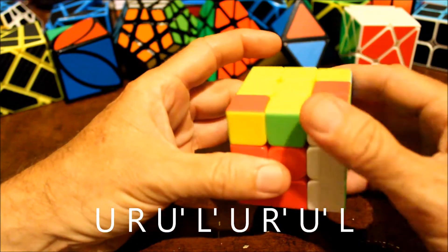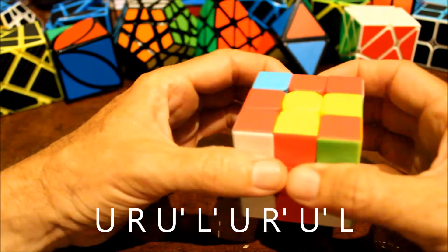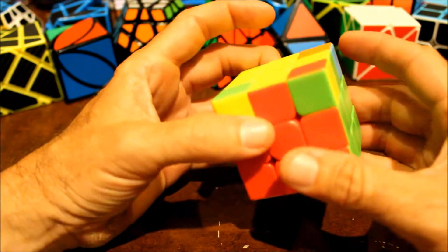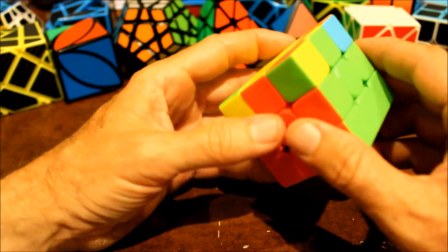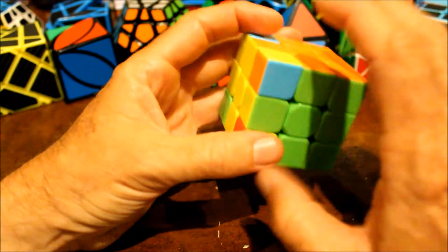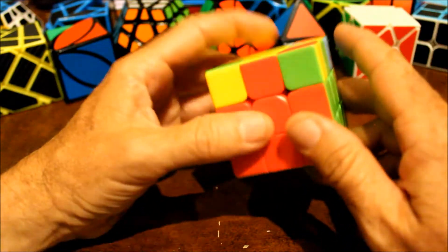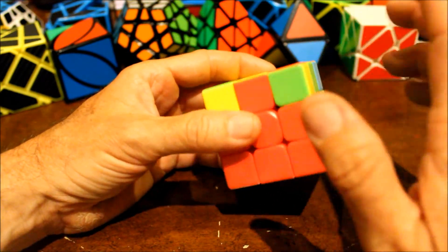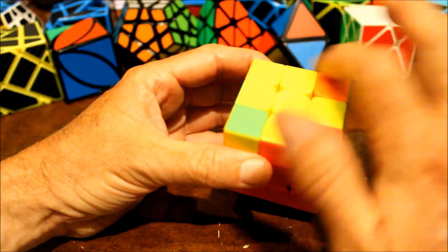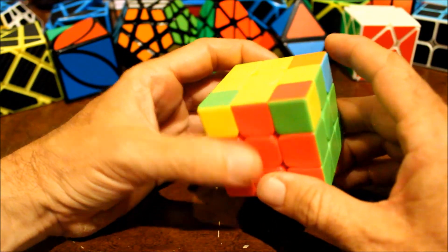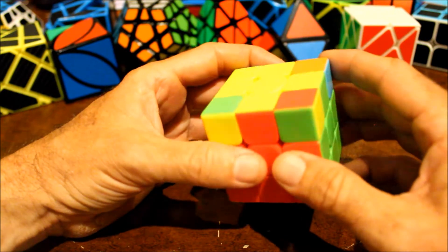Up, right, upper prime, left prime, up, right prime, upper prime, left. And now let's see where we're at. Correct, wrong, wrong, wrong. So as I said before, sometimes you need to do it twice because it rotates the other three.